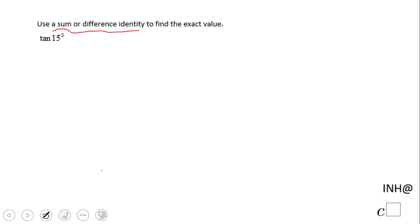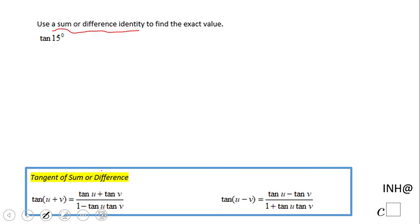We have six of those identities, but only two of them involve tangent. The next question to ask yourself is which one to use, and that depends on how you rewrite 15 using classic angles. One way to write 15 is 45 minus 30.